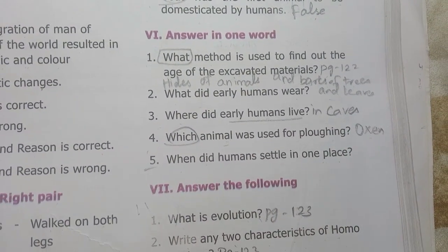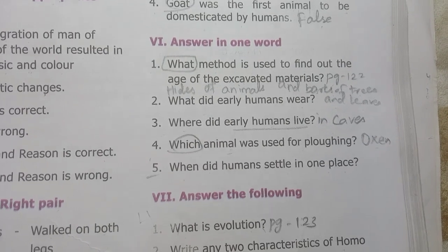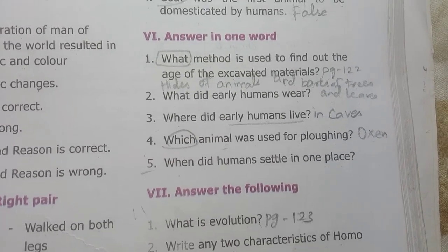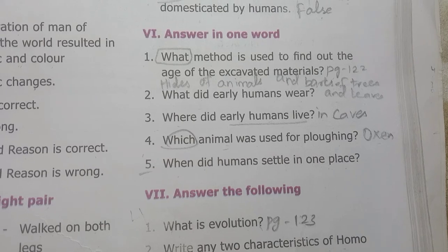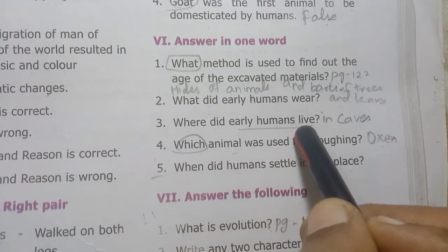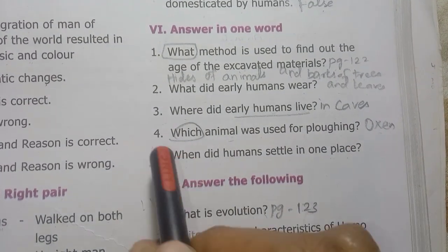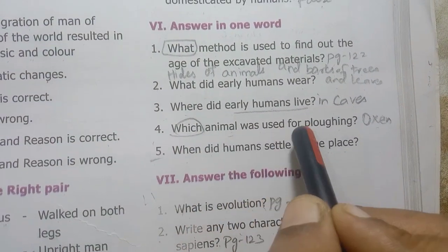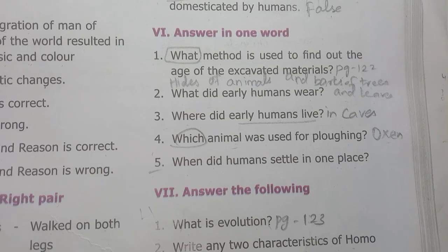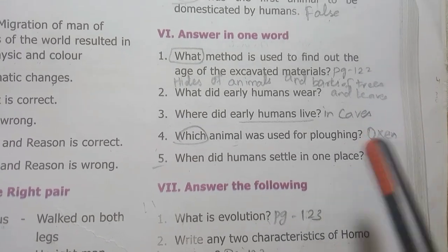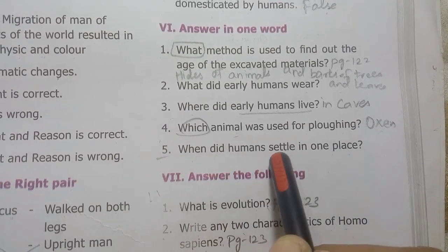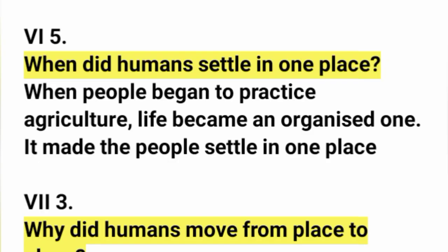Early humans used animals, trees, barks, and leaves for clothing. Where did the early humans live? They lived in caves. Which animal was used for plowing? Oxen. When did humans settle in one place? When people began to practice agriculture, life became an organized one and it made the people settle in one place.